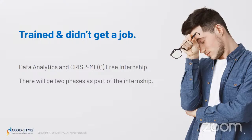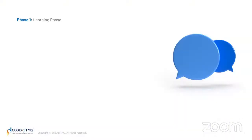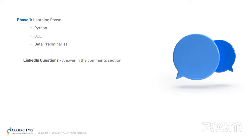By 360 DGMG — talking about this particular project, it is in two phases. There will be two phases as part of this internship. The first phase is the learning phase. In the learning phase, you'll learn Python, SQL, and data preliminaries. You'll be learning a lot and answering questions. You'll be brushing up the basics — whether you already know it or not, you'll definitely learn a lot here.